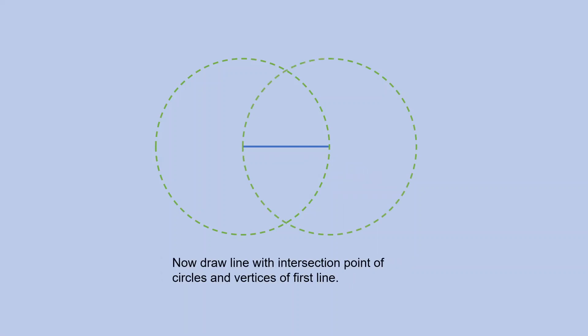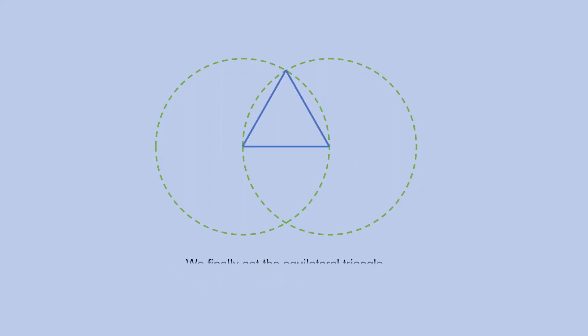Now join the intersection points of the circles and the vertices of the line. Here you get your equilateral triangle.